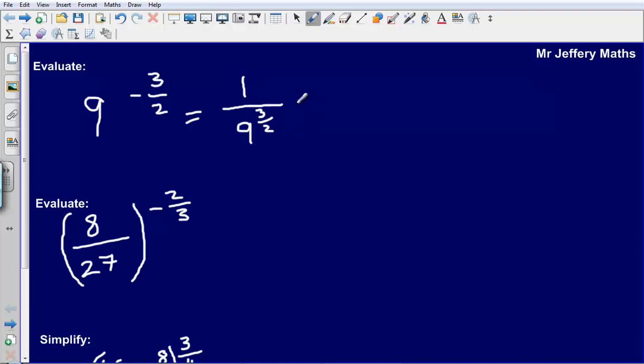Now once we have done that, let's evaluate this 9 to the 3 halves. So what is 9 to the 3 halves? Well, we can begin by saying that it is the square root of 9 cubed. So the square root part comes from the 2 from the denominator and the cubed part comes from the numerator.